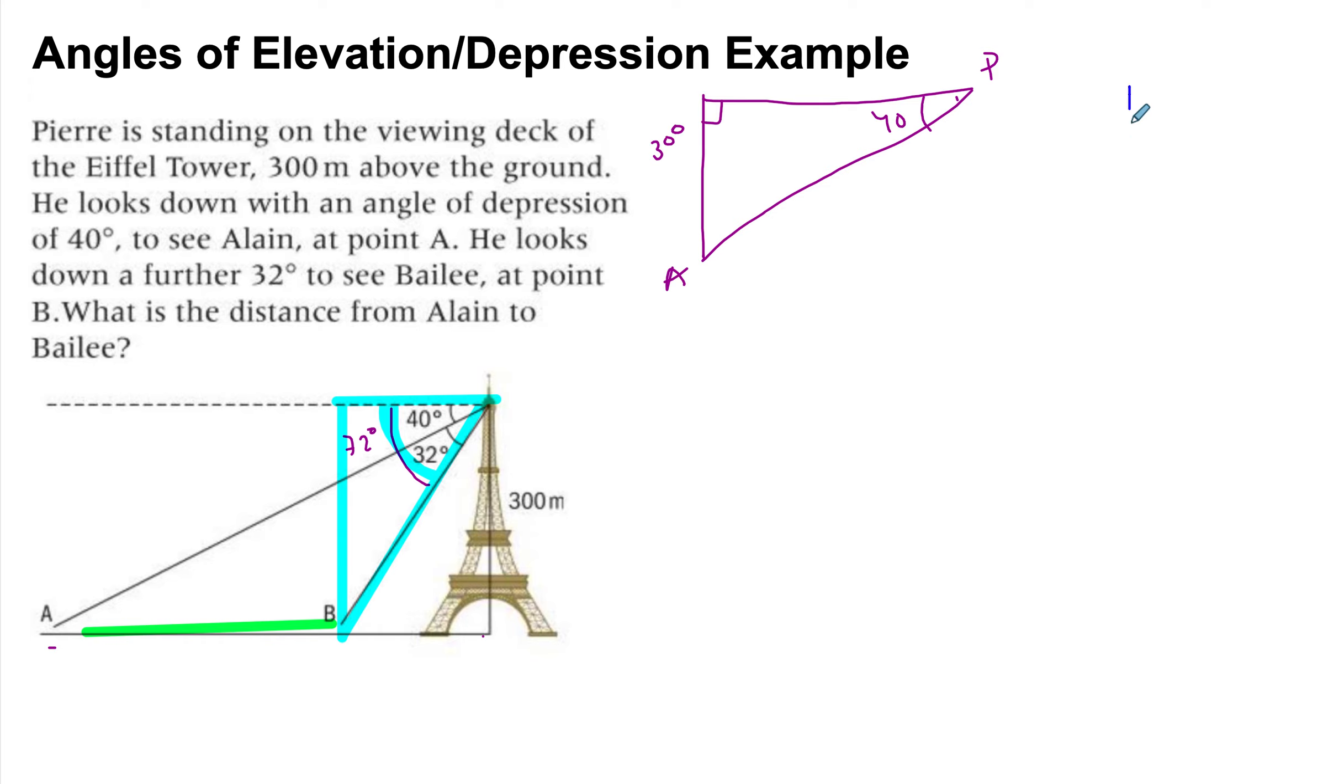So if I just take this apart, this is my 72. This is Pierre. This is Bailey. And again, the height is the same. It's 300.